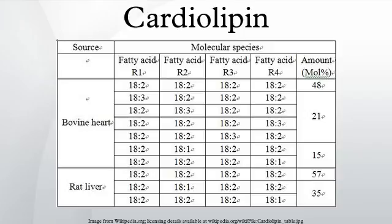Cardiolipin from a cow heart is used as an antigen in the Wassermann test for syphilis. Anti-cardiolipin antibodies can also be increased in numerous other conditions, including systemic lupus erythematosus, malaria and tuberculosis, so this test is not specific.